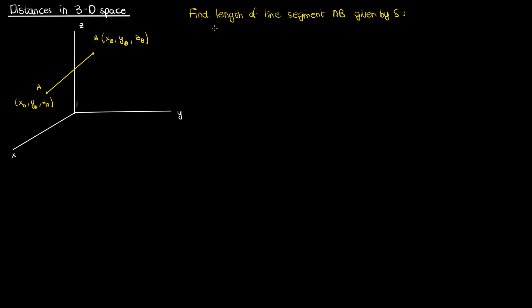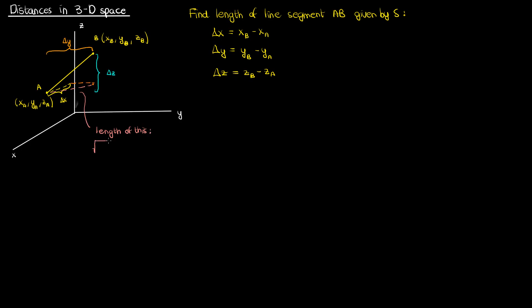In this rectangular coordinate system, capital S would be defined using the difference between the values of x at the endpoints, which I'll call delta x, along with the differences in the values of y and z, which I'll call delta y and delta z respectively. I can use the three-dimensional version of the Pythagorean theorem. First, I calculate the hypotenuse formed by the right triangle between delta x and delta y — that hypotenuse is the square root of delta x squared plus delta y squared. This hypotenuse is then another leg of a right triangle with capital S as the hypotenuse, so capital S squared equals delta x squared plus delta y squared plus delta z squared.